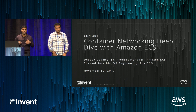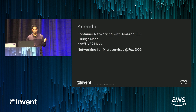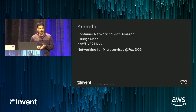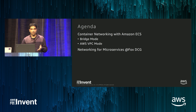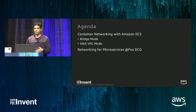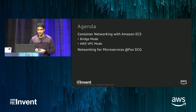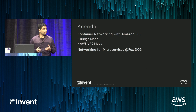So I'll just kick off. This is a 400-level session. We will cover container networking with Amazon ECS. The first mode we will talk about is the bridge mode, which is the most popular mode—the de facto standard with ECS. And recently, just two weeks ago, we introduced the task networking mode, or as we call it, AWS VPC mode. Then Shaquille will go over the story at Fox with respect to networking for microservices.